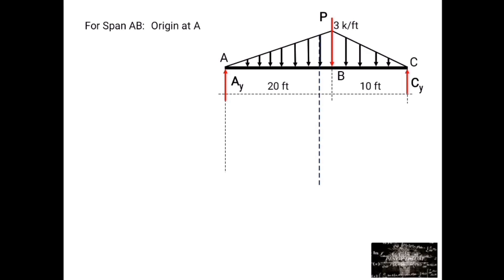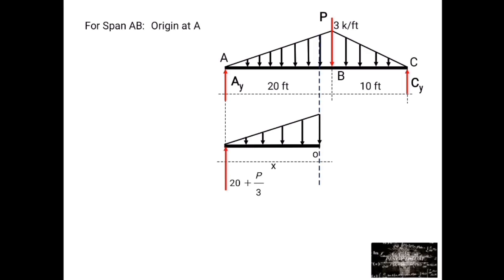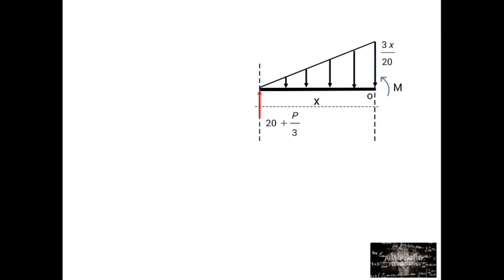For span AB, the origin is at A. We cut segment AB at a distance X from point A, with limits 0 to 20. Reaction AY equals 20 plus P over 3. The intensity at the cut is 3X over 20. The resultant is one-half times 3X over 20 times X, which equals 3X squared over 40, acting at a distance X over 3 from point O.